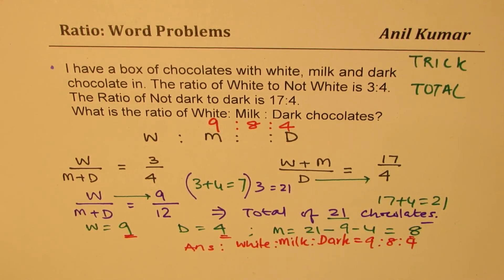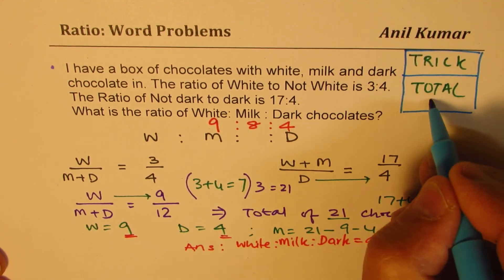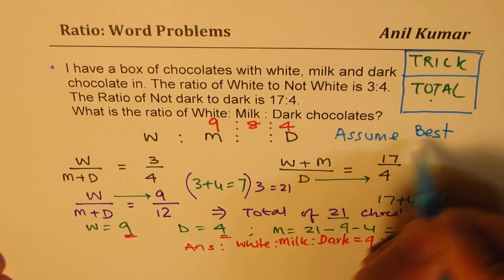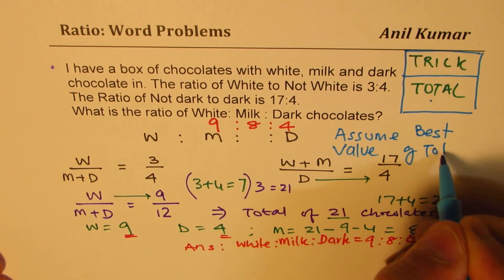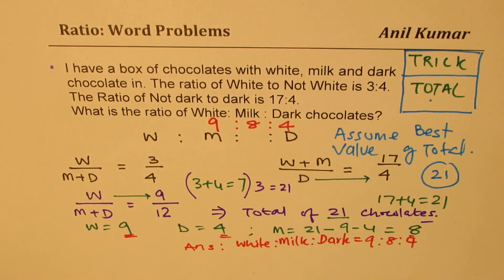That is how, without using any equations — just logic and numbers — we solved all three questions. The key trick is to figure out the best total to work with. If the total is not given, assume the best value, as we did by assuming 21 chocolates. Once you have that, the question becomes easy to solve. Feel free to write your comments and share your views. If you like the content, subscribe. Thanks for watching and all the best!